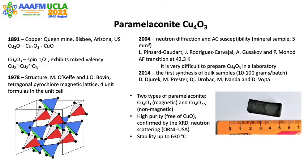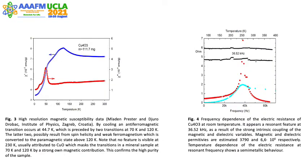The paramelaconite was confirmed by XRD, AC susceptibility, and neutron scattering. Figure 3 shows the high-resolution AC susceptibility performed by Prester and colleagues from the Institute of Physics in Zagreb, Croatia. The results revealed the antiferromagnetic transition at 44.7 K and two additional magnetic transitions at higher temperature.